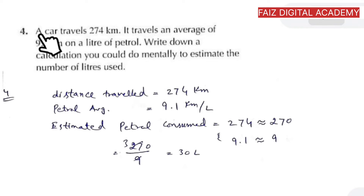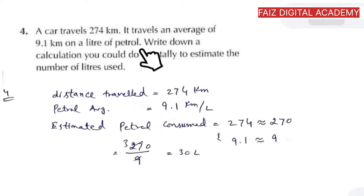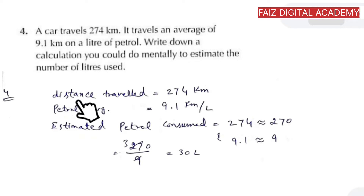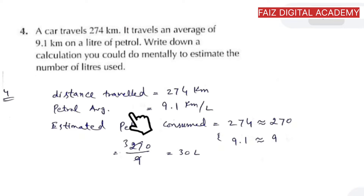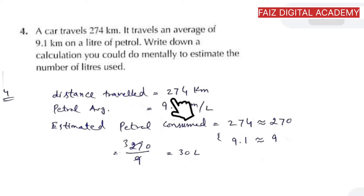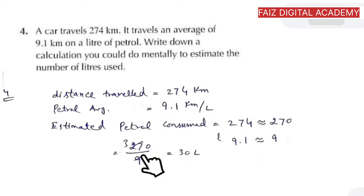Question number four states that a car travels 274 km at an average fuel efficiency of 9.1 km per liter of petrol. Write down a calculation you could do mentally to estimate the number of liters used. We round 274 to 270 and 9.1 to 9, then divide 270 by 9. The estimated total fuel used is about 30 liters.